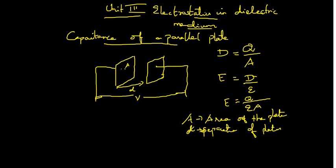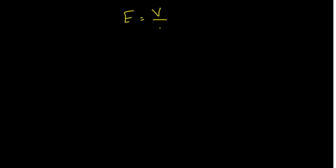The key quantities are A, d, and epsilon — that is, permittivity. These things we have to know first. We know that the electric field is given by V divided by d from the diagram. So, the electric field E is equal to V divided by D.